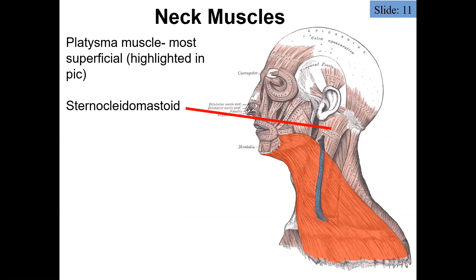The first muscle we encounter when we remove the skin around the neck is the platysma muscle. It's a very superficial, very thin strip of muscle that covers the contours of the neck. This is why we can usually see the pulsation of arteries and veins in the neck — because of the very thin and superficial nature of the platysma muscle.